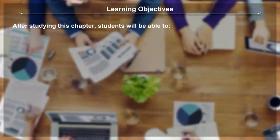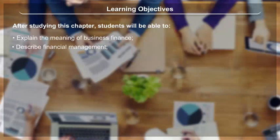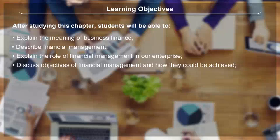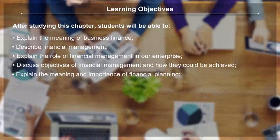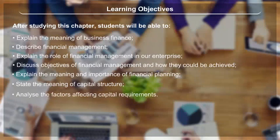Learning Objectives: After studying this chapter, students will be able to explain the meaning of business finance, describe financial management, explain the role of financial management in an enterprise, discuss objectives of financial management and how they could be achieved, explain the meaning and importance of financial planning, state the meaning of capital structure, and analyse the factors affecting capital requirements.